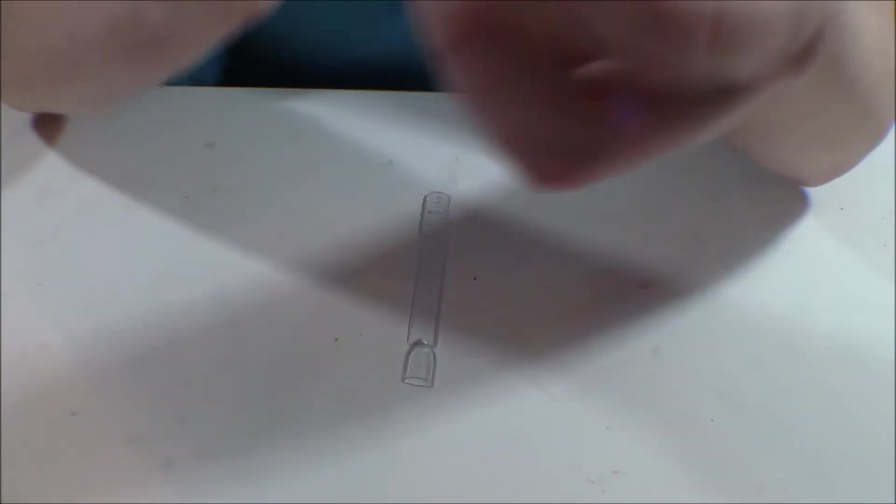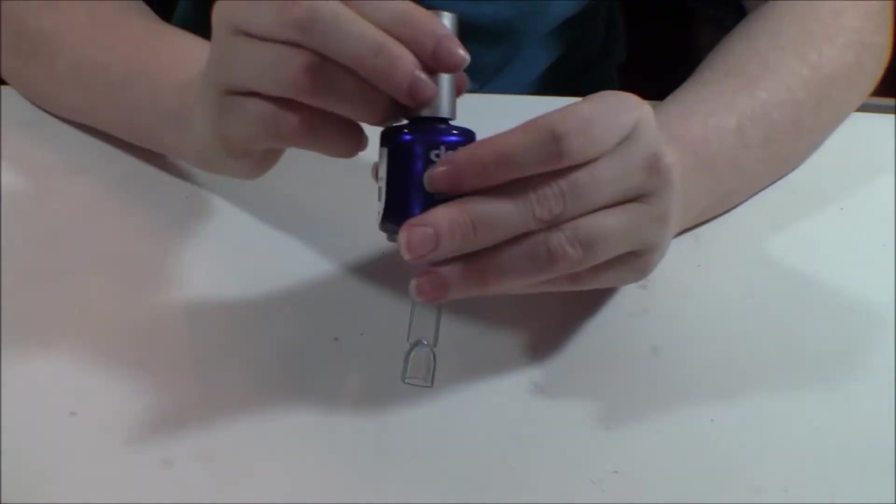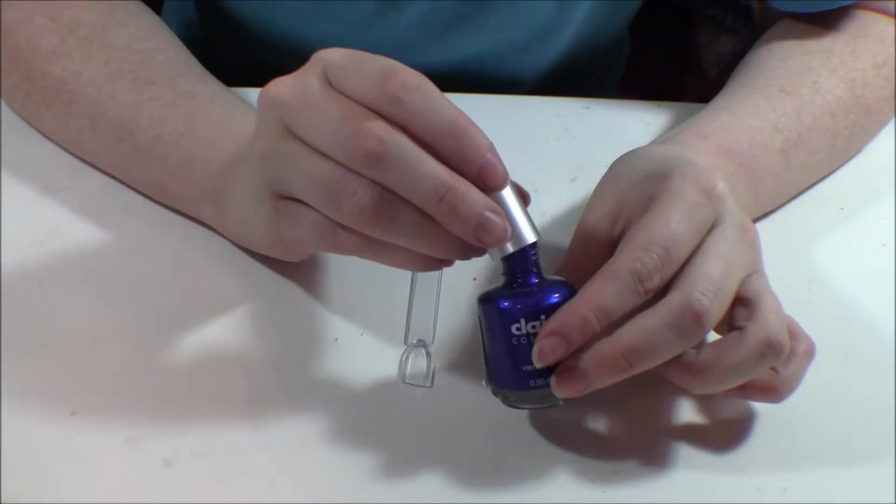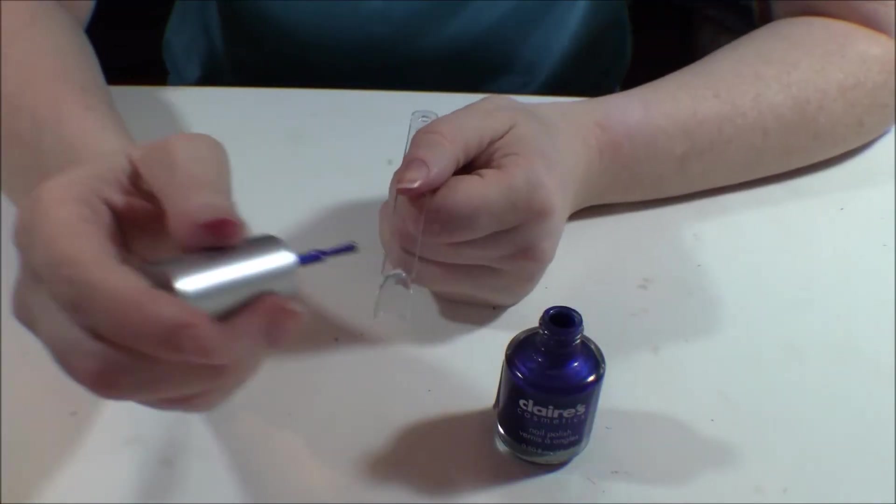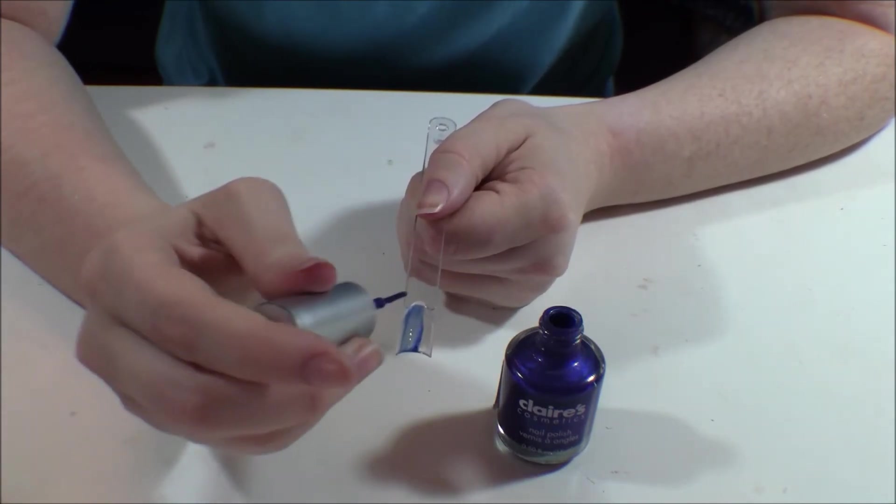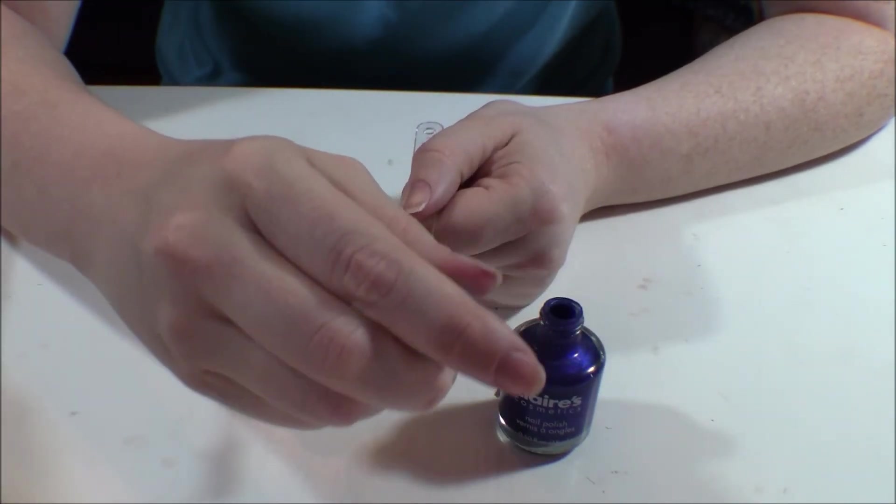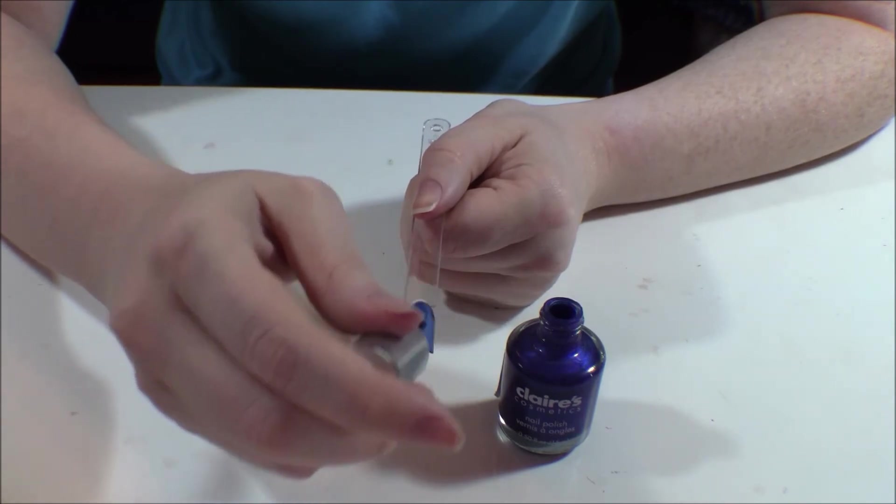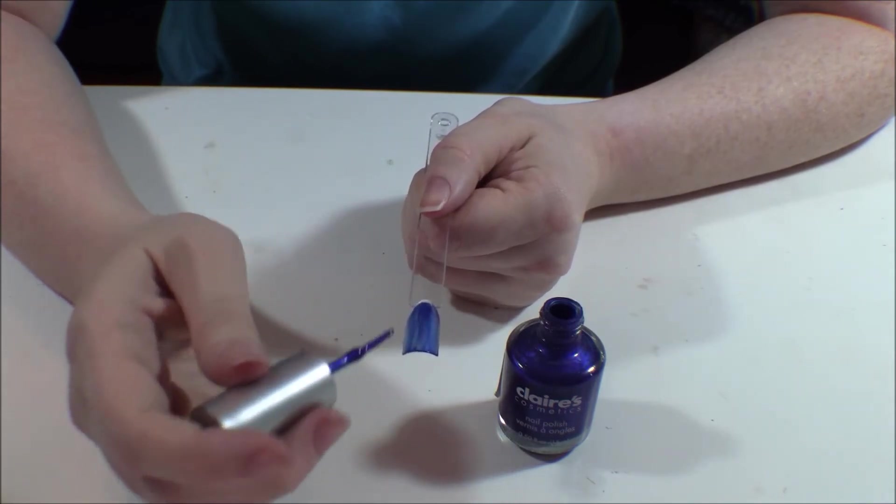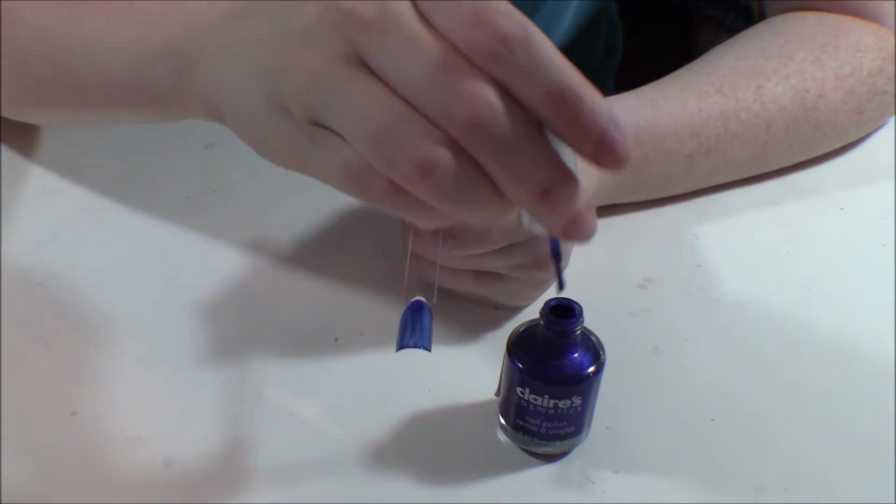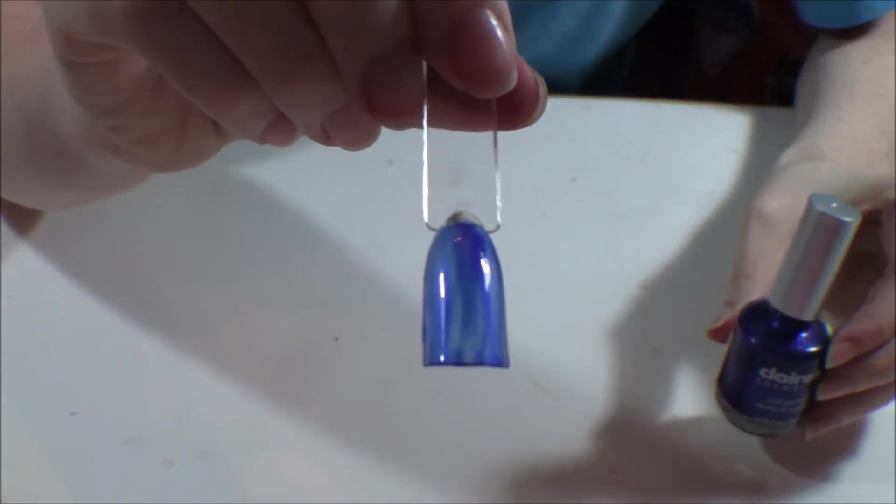And for my last one we're going to do this one is called Rocket Blue. It's another one of the Claire's Cosmetics colors and this is a deep royal blue with a lot of sheen to it. I'd probably consider this one like a metallic kind of finish to it. Alrighty, so that was the first coat of Rocket Blue.